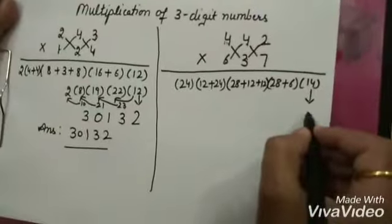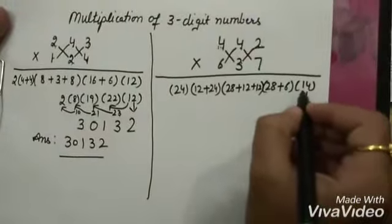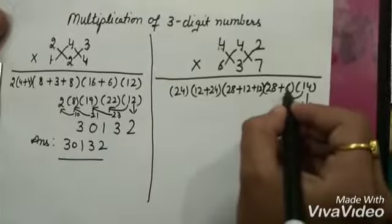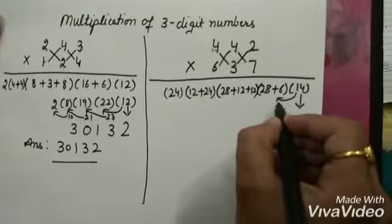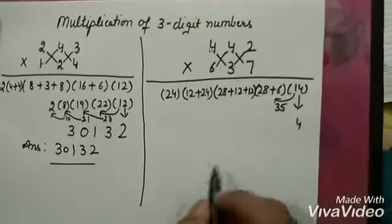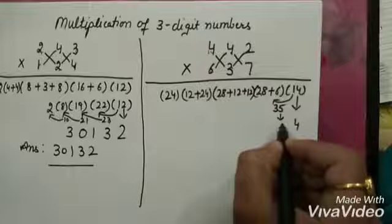This 4 as it is. 1 is added here. 28 plus 6 is 34. 34 plus 1 is 35. So this 5 we will write here.